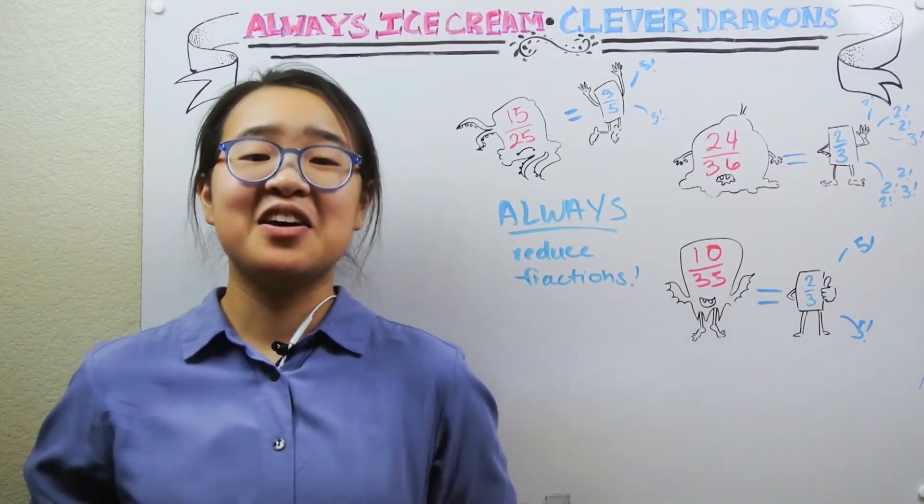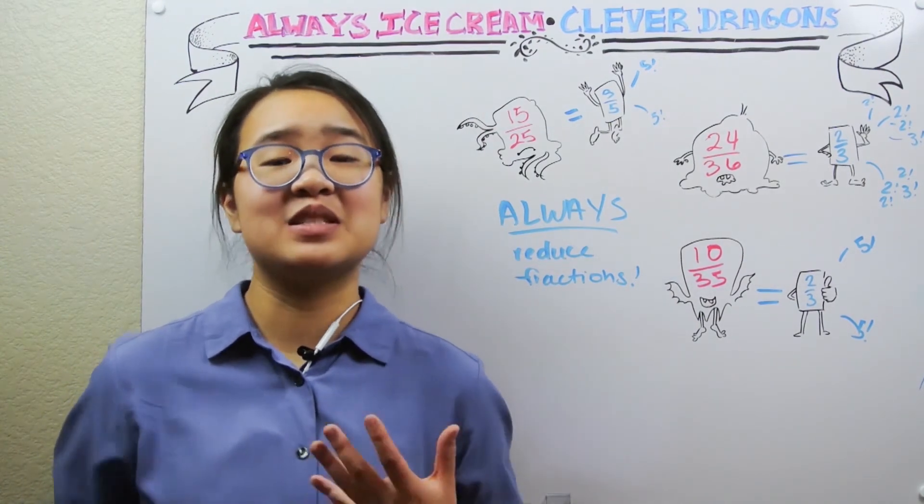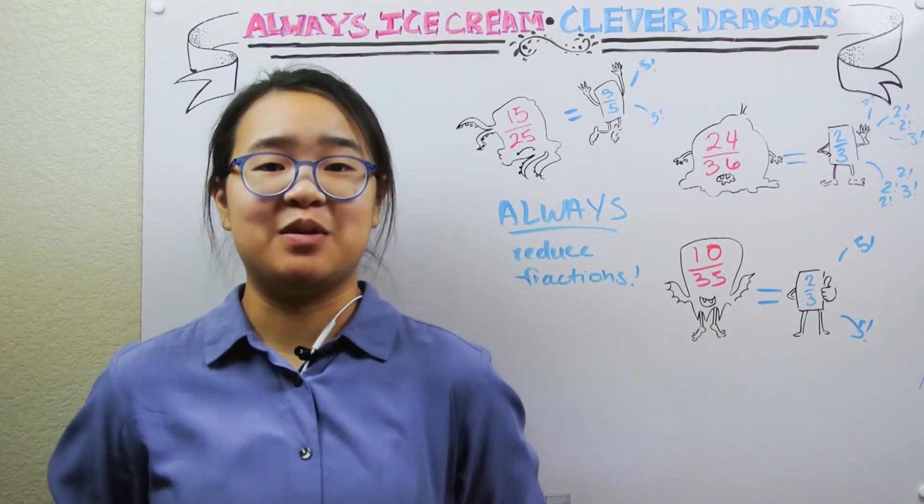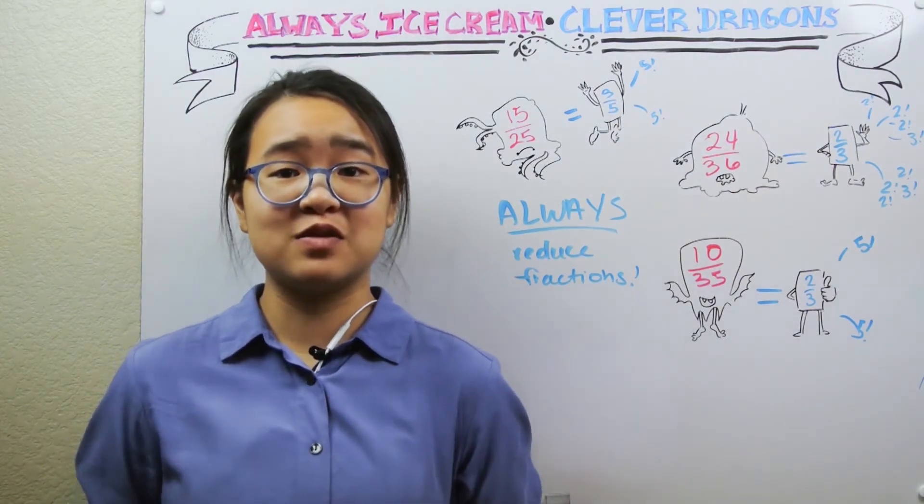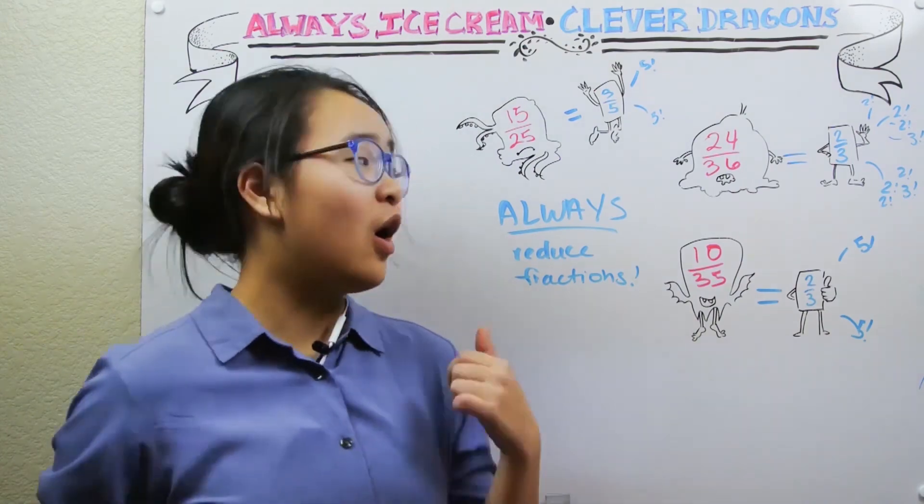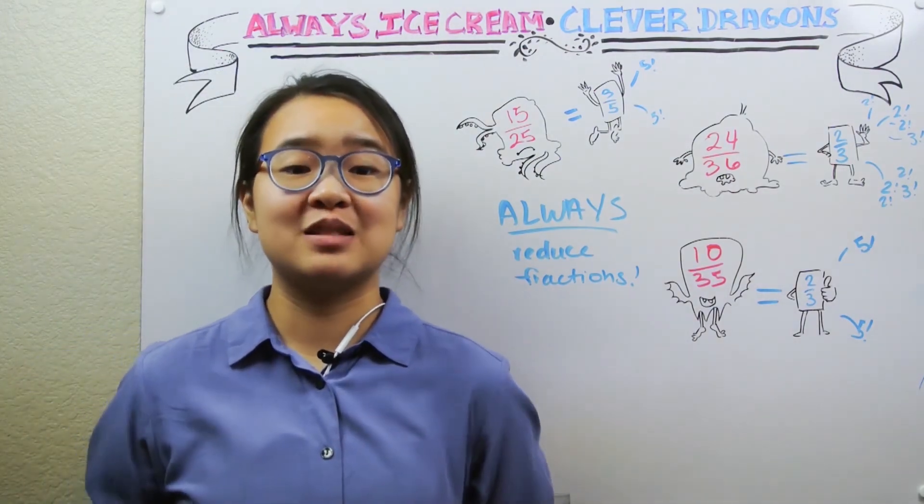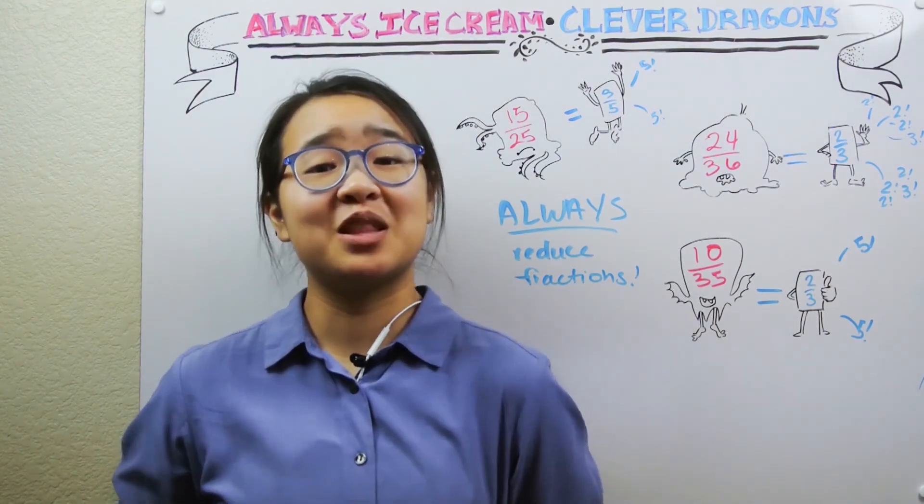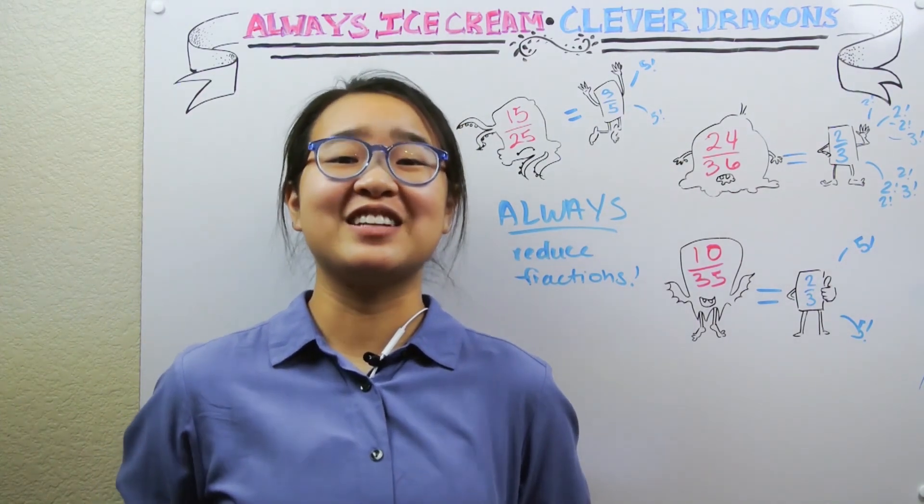And there you have it. For simpler fractions, the way that I always think about reducing them is dividing the numerator and the denominator by the same number. This way, the fractions themselves aren't actually changed, but you can still fully reduce it. Always remember to reduce your fractions, especially if you're playing some of our fun games on Always Ice Cream and Clever Dragons. Check them out if you haven't already, and I'll see you next time.